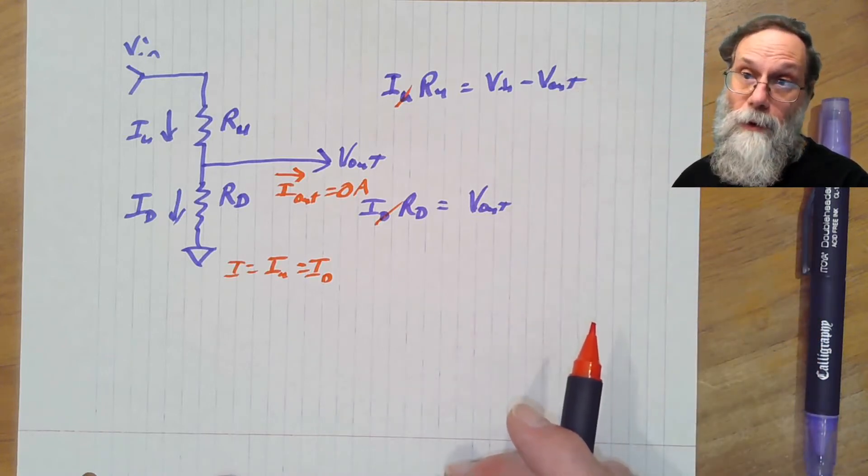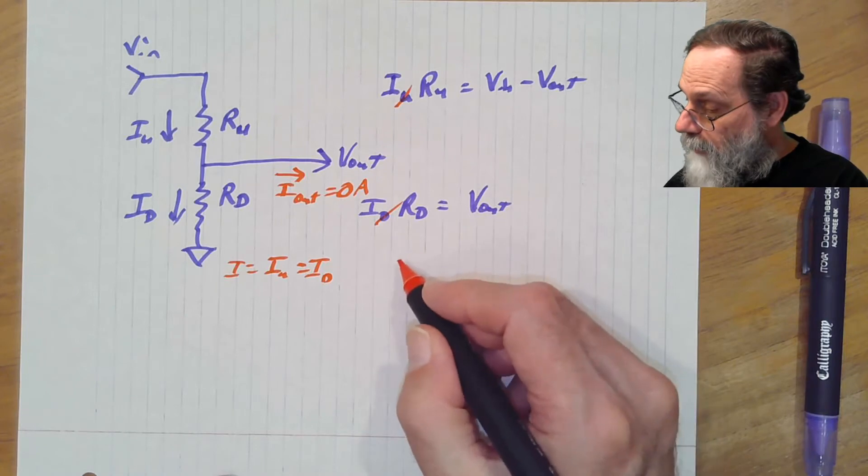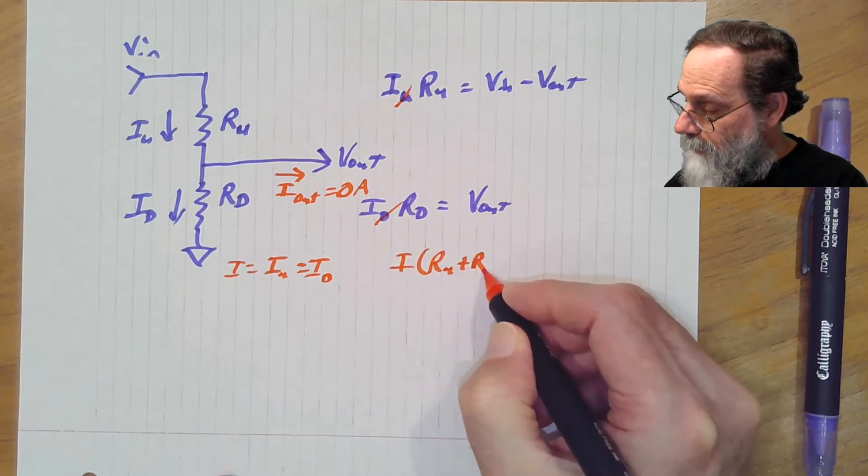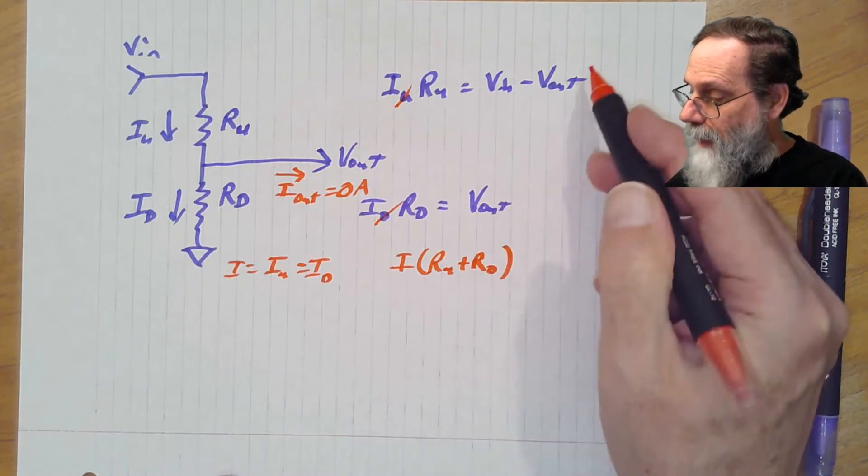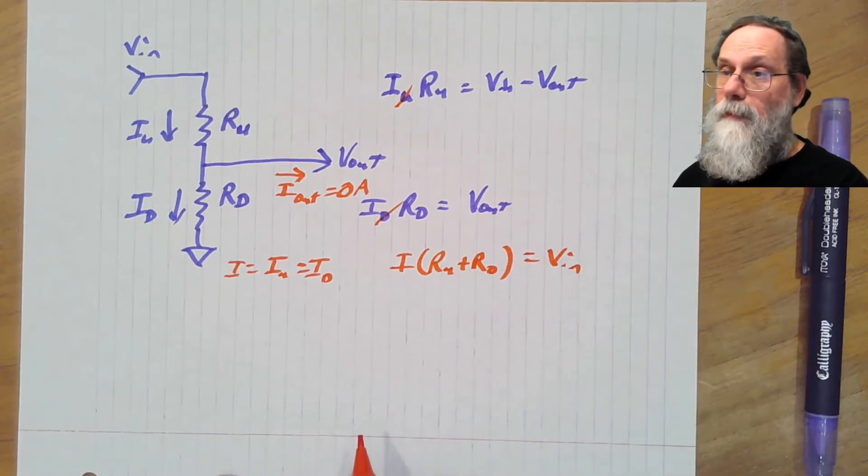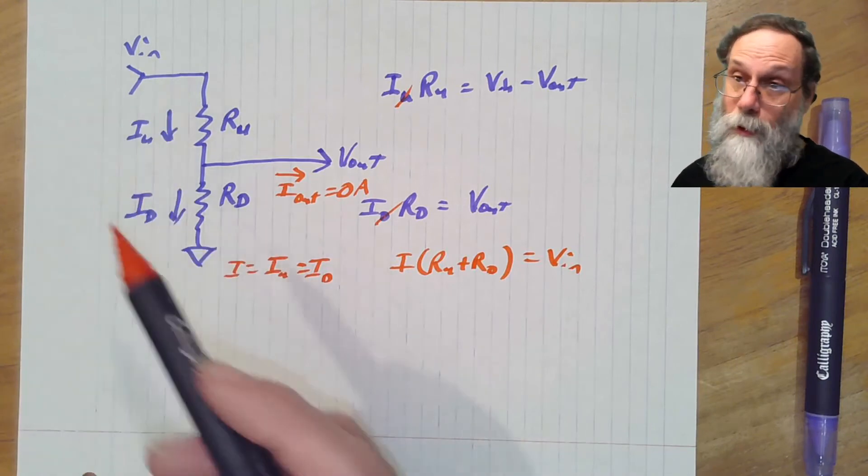One is, what happens if we add these two equations? Well, then we would just get I times Ru plus Rd minus Vout cancel. That's just Vin.